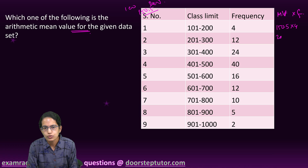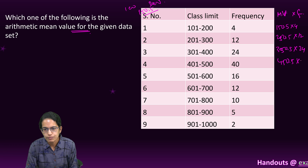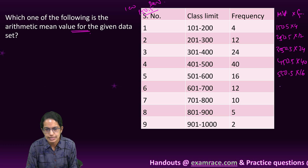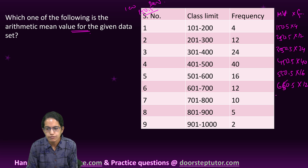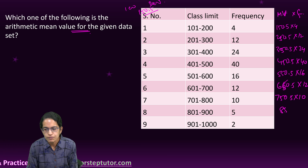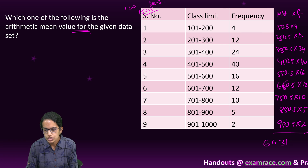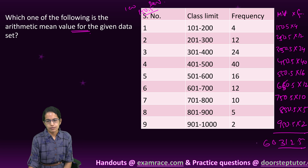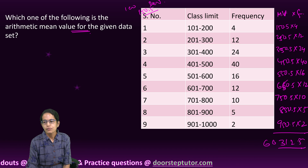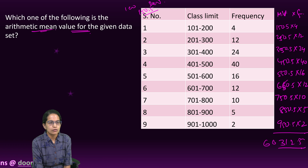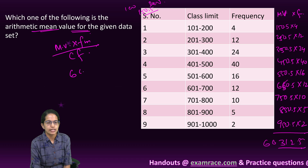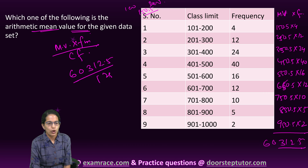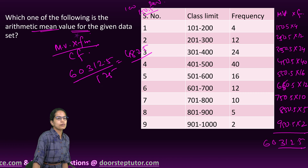The mid value times frequency calculations: 150.5×4, 250.5×12, 350.5×24, 450.5×40, 550.5×16, 650.5×12, 750.5×10, 850.5×5, and 950.5×2. Adding all these gives 60,312.5. The arithmetic mean is the sum of (mid value × frequency) divided by the total cumulative frequency: 60,312.5 ÷ 125 = 482.5.